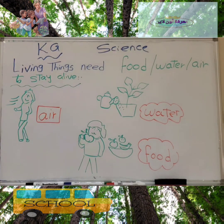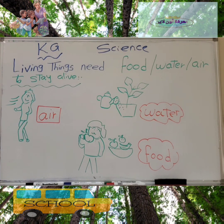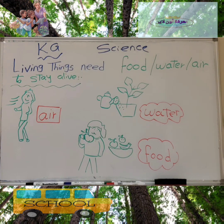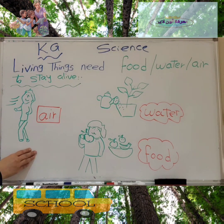As we studied in the previous lesson, what are living things? Living things are all animals, people, birds, and plants. These are all living things.